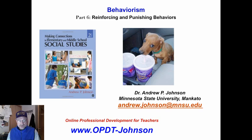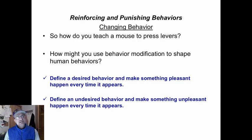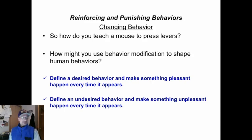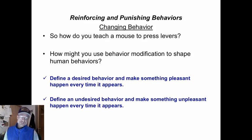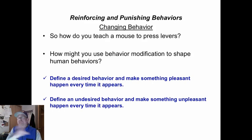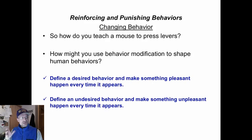Still on behaviorism, we are talking about reinforcing and punishing behaviors. Let us get a definition of our terms. How do you teach a mouse to press a lever? How might you use behavior modification to shape human behaviors? Define a desired behavior and make something pleasant happen every time it appears, or define an undesired behavior and make something unpleasant happen every time it appears. That's a simplistic notion that people generally hold when they think of behavior modification. Let us unpack and clarify these ideas.